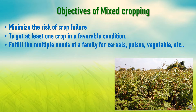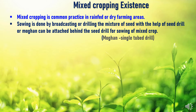Mixed cropping is done to fulfill the needs of a family for cereals, pulses, and vegetables. Mixed cropping generally follows the pattern of growing crops belonging to these categories, so the farmer gets different types of produce as per their requirements. Mixed cropping is a common practice in rain-fed or dry farming areas.